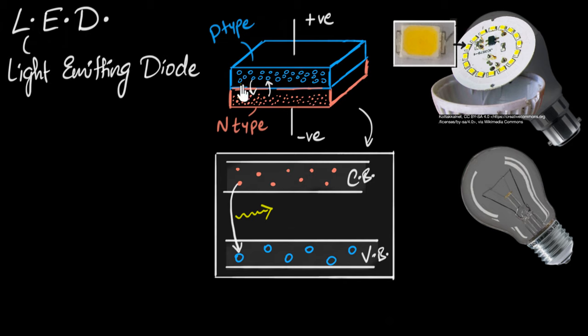Now, since most of the recombination happens near the junction, that's where most of the holes and electrons destroy each other by recombining, that's where most of the light gets emitted. And this is how a light emitting diode works. So you forward bias it, electrons and holes recombine near the junction, giving out light.